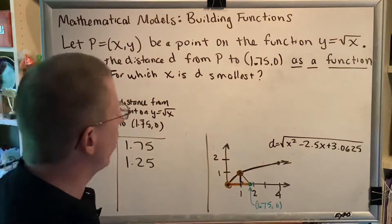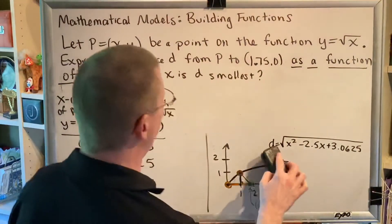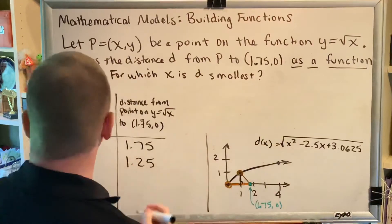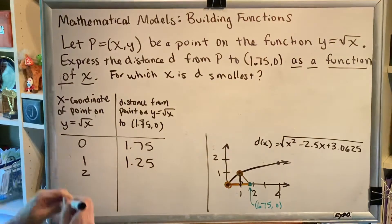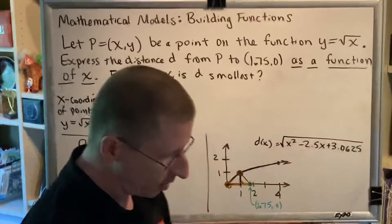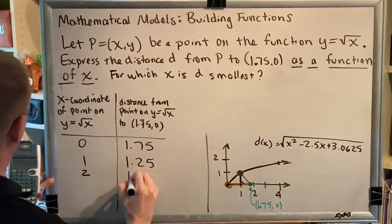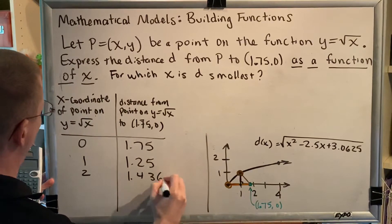Since we have this formula, we can continue plugging into it. Let's plug in a few more values. What if x is 2? I'll replace all of these x's with 2, put that in my calculator, and I get 1.436.